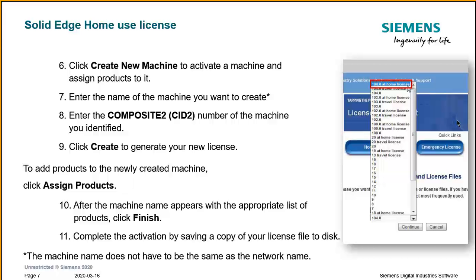To add products to the newly created machine, click Assign Products. After the machine appears with the appropriate list of products, click Finish. To complete your activation, save a copy of the license to your disk — you can save it on the desktop or in a specific directory that can be accessed later.